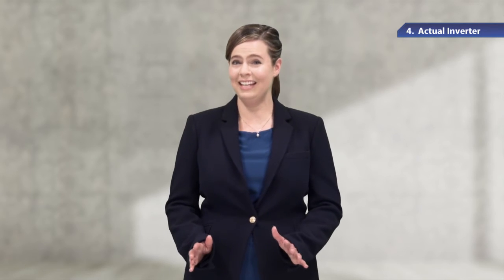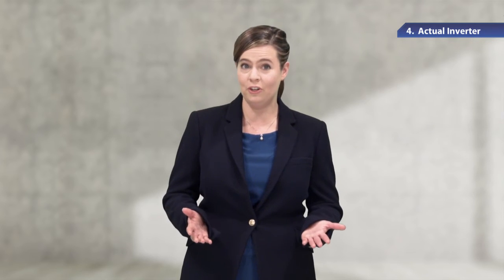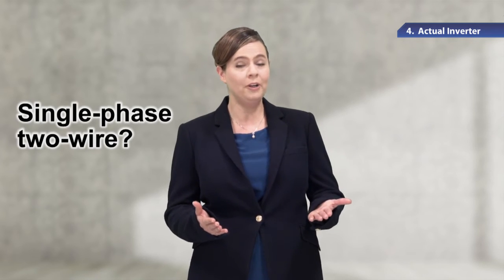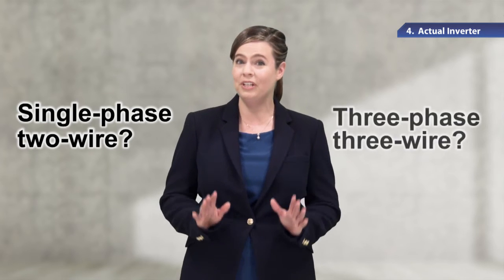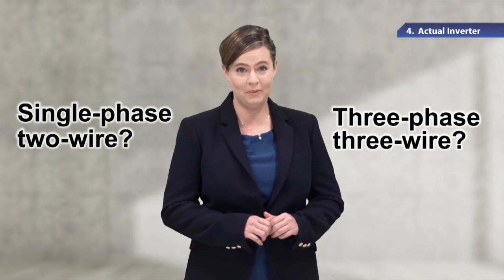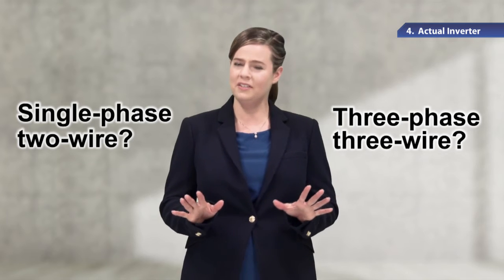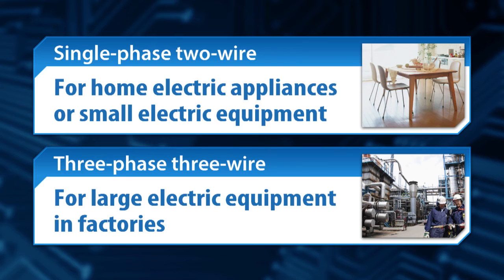Next, let's connect the inverter to the power supply. There are two types of power supply that can be used for the inverter: single-phase, two-wire power supply and three-phase, three-wire power supply. These terms may not sound familiar. Single-phase, two-wire system electric power is used for home electric appliances and small electric equipment. Three-phase, three-wire system electric power is for large electric equipment in factories.